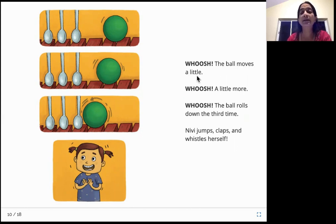The ball moves a little. A little more. The ball rolls down the third time. Nivi jumps, claps and whistles herself. What has she done now? She's done something fantastic. So when the whistle of the cooker goes shh, it moves the ball. This is a plastic ball and it's very light. So the steam that comes out from the cooker has so much energy that it starts moving this light plastic ball towards the spoons. After the three whistles, the ball starts rolling and starts hitting the spoons.